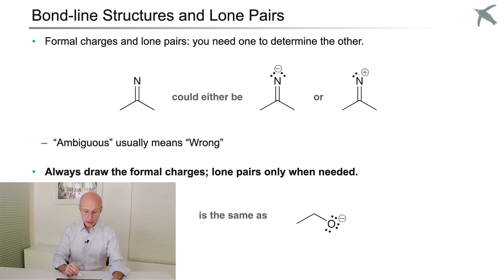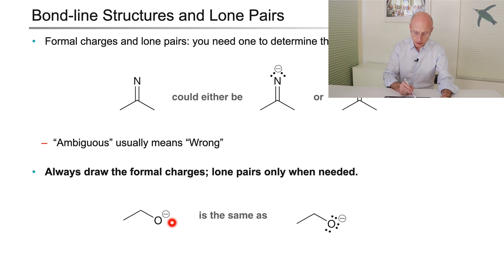By convention, you always show the formal charge. You only show the lone pairs when you need them, when you need to push them around for a mechanism, for example. If you draw the oxygen this way is the same as drawing it this way with all the lone pairs. The lone pairs are understood.